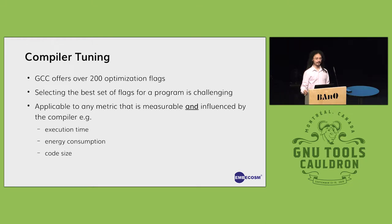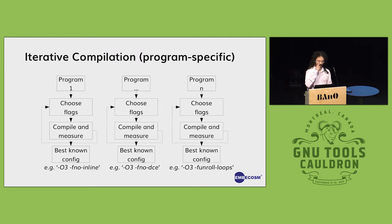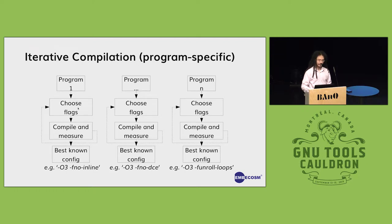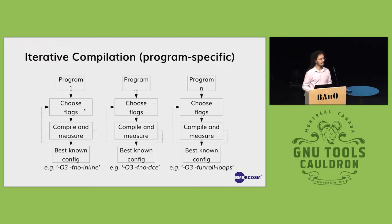This has been researched a lot. It started off with search techniques — these are iterative compilation techniques. The way this works is: for each program you choose a set of flags, compile and measure whatever you're interested in, such as code size, keep doing this and take the best configuration you got. The challenge is how do you choose those flags, and various methods have been proposed, starting with the simplest — a random selection of flags — which in the past has held up pretty well against some of the supposedly smarter methods.